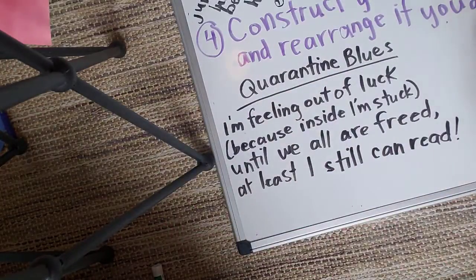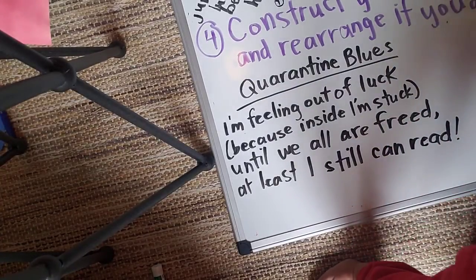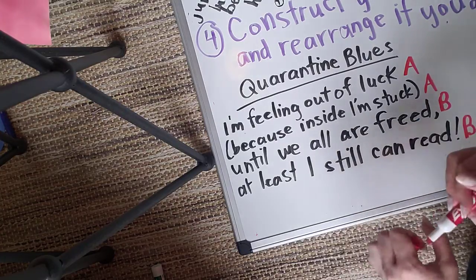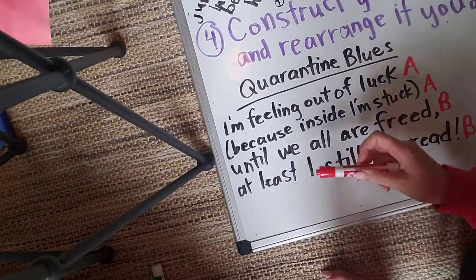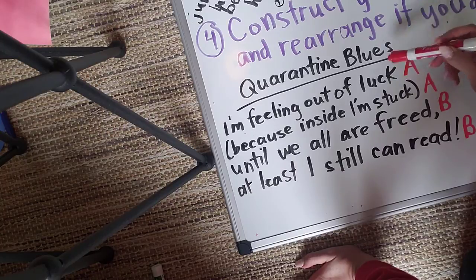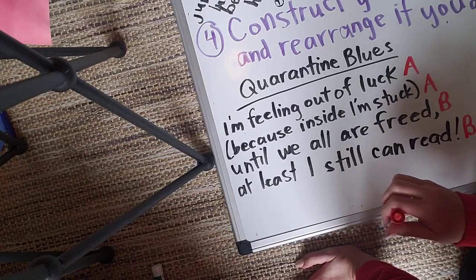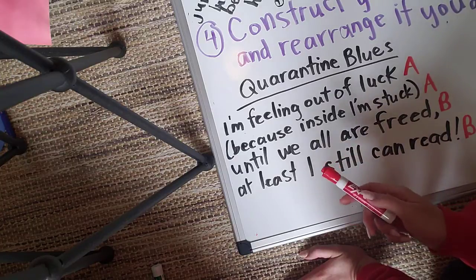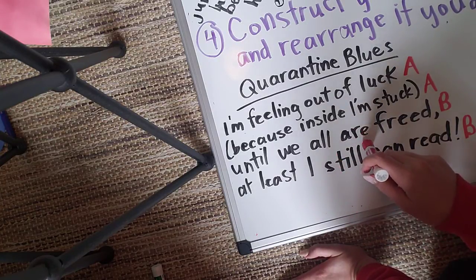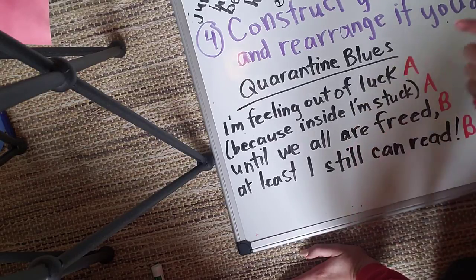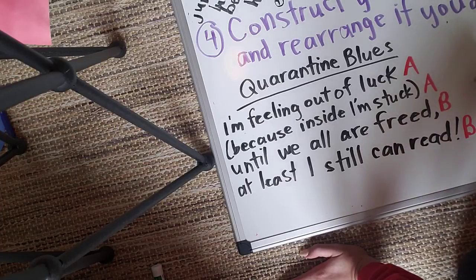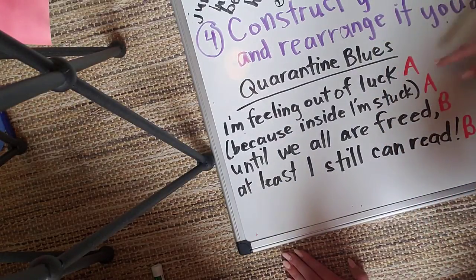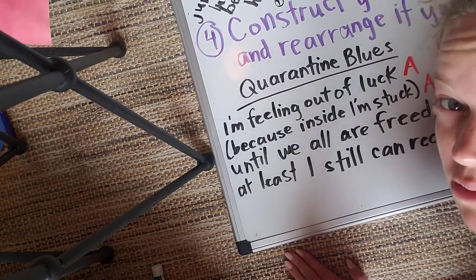I've chosen my rhyme scheme, and I actually switched it up from what I originally planned. I put ABBA, but now I'm doing AABB. Could I easily rearrange this poem? Yes — I could switch it and have it say: 'I'm feeling out of luck, until we all are freed, because inside I'm stuck, at least I still can read.' Oh yeah, that works! So that one actually works — it might even be better than the original. So I can rearrange it and have ABAB, and it still works as a smooth, funny poem.